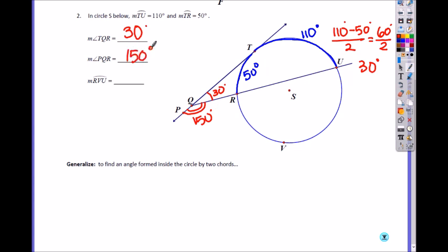What is the measurement of RVU? What would you do? 360 minus these two, right? 160. So you get 200.